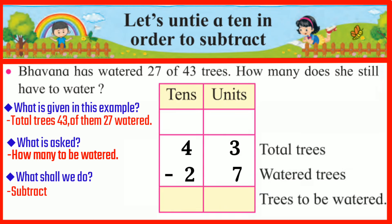We cannot subtract 7 units from 3 units, hence we borrow one 10 and make 10 units of it. Thus we get 13 units. Reduce 7 units from 13 units — 6 units will be left. 3 tens minus 2 tens is equal to 1 ten. So the answer is 16. 16 trees still to be watered.